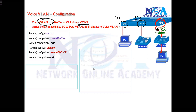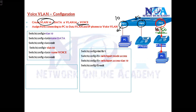Next we need to assign the ports. Port number one needs to be assigned to VLAN 10. The commands are: interface Fa0/1, switchport mode access, and then switchport access VLAN 10. This is a data VLAN — we have already seen the configuration for normal data VLANs and how to assign the ports.